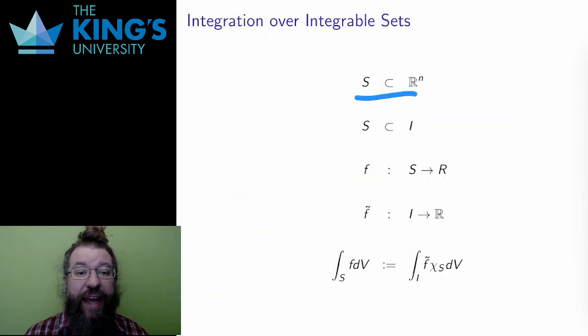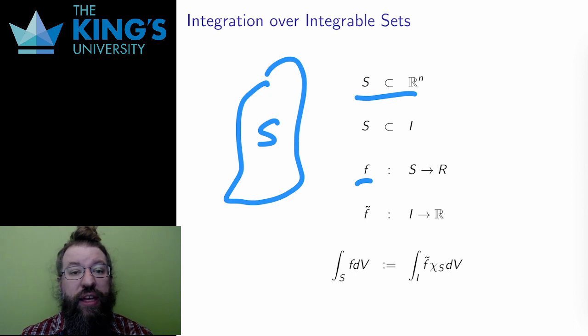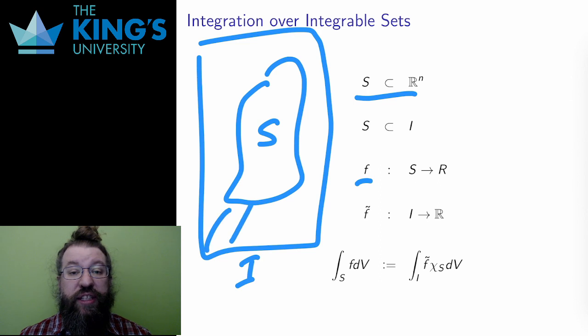So now say that S is an integrable set, and say I want to integrate the function f with domain S. How do I do this? Well, I want to do the same thing as I just did. I put S inside an interval, and I integrate over the whole interval. And I multiply by the characteristic function, therefore removing all points from outside S, setting all of that volume equal to zero, essentially.